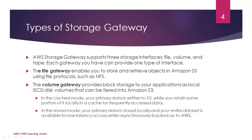In Stored mode, your primary data is stored locally — all of it is stored inside the data center and your entire data set is available for low latency access, while asynchronously backed up to AWS. The primary data will be available on-site within the DC itself, and data transport happens through the Volume Gateway. So remember: in Cache mode, frequently accessed data is available locally; in Stored mode, all primary data storage happens locally.